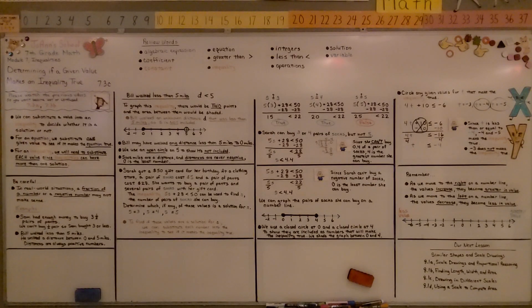So remember, when we graph with an open circle, it means the number is not included. When we graph with a closed circle, it means that number is included. And also keep in mind, in real-world situations, a fraction of a number or a negative number may not make sense.